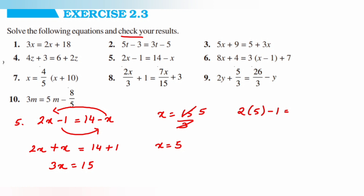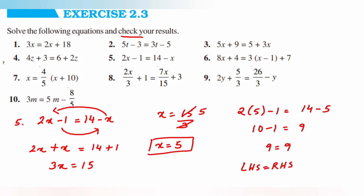Now we'll check the answer: 2 into 5 minus 1 is equal to 14 minus 5, giving 10 minus 1 is equal to 9, and 9 is equal to 9. LHS is equal to RHS, so x is equal to 5 is the correct answer. Now we'll move on to the sixth question.